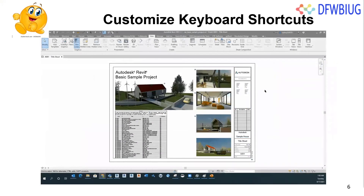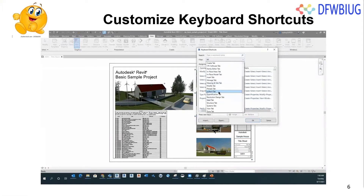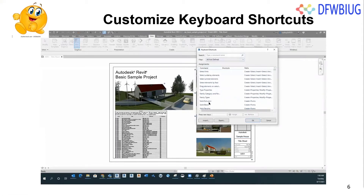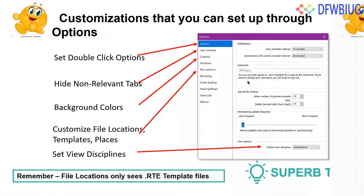Keyboard shortcuts really help speed you up. There's a PDF cheat sheet online, but you can also create your own custom keyboard shortcuts and export them to an XML file, allowing you to import those custom shortcuts onto your own machine. You can set up shortcuts for Revit commands and for anything from an add-in.